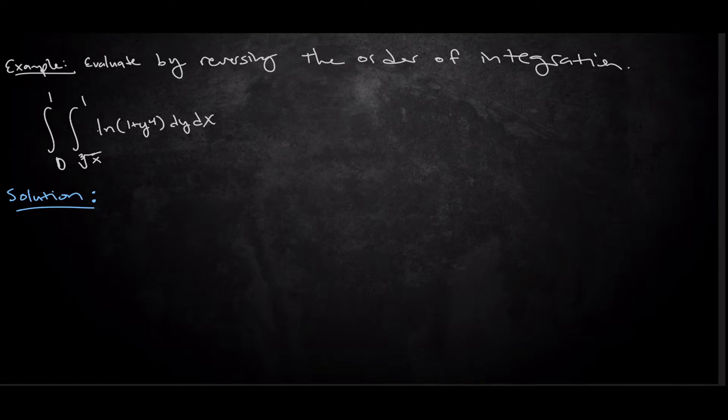This problem is actually gonna have a lot of layers to it. The first thing I need to do before I can actually reverse the order of integration is to know what is the region of integration that I'm using. The region of integration that's given to me, I get from the bounds. It tells me that y is between the cube root of x and 1, while x is between 0 and 1.